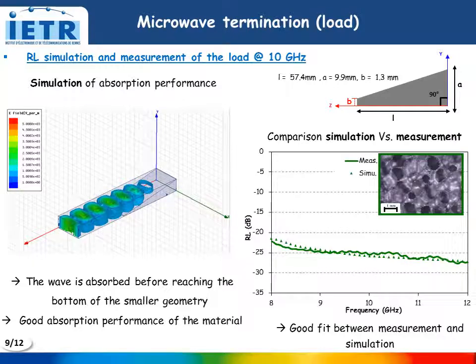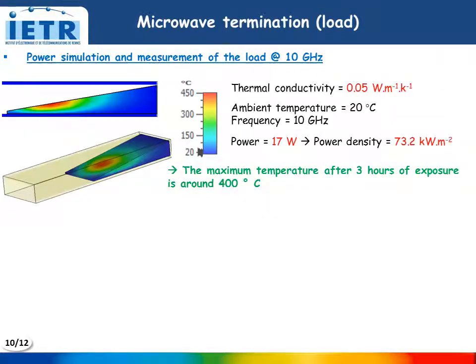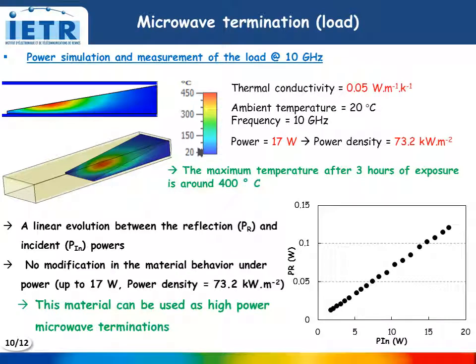Moreover, a good fit is obtained between simulation and measurement of the reflection loss of this absorber. The power simulation of this load shows that the maximum temperature reached under 73 kW per meter square is around 400 degrees. The measurements show that for the same power density, there is no modification in the material behavior. So this material can be used as high-power microwave terminations.